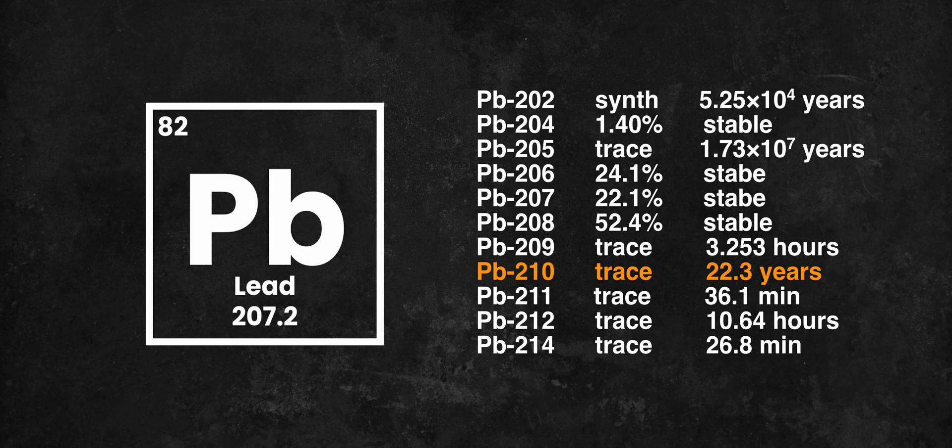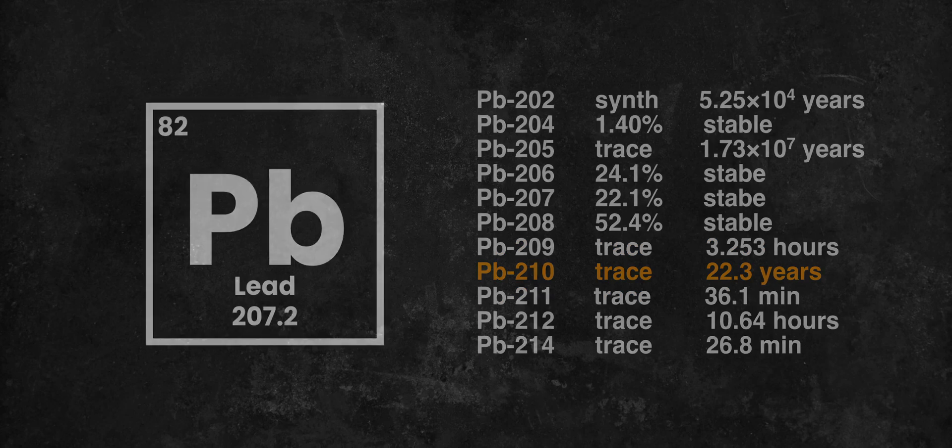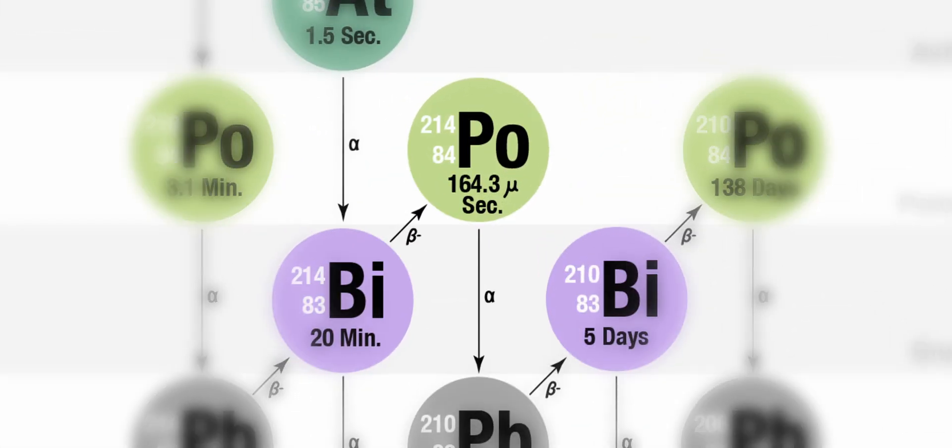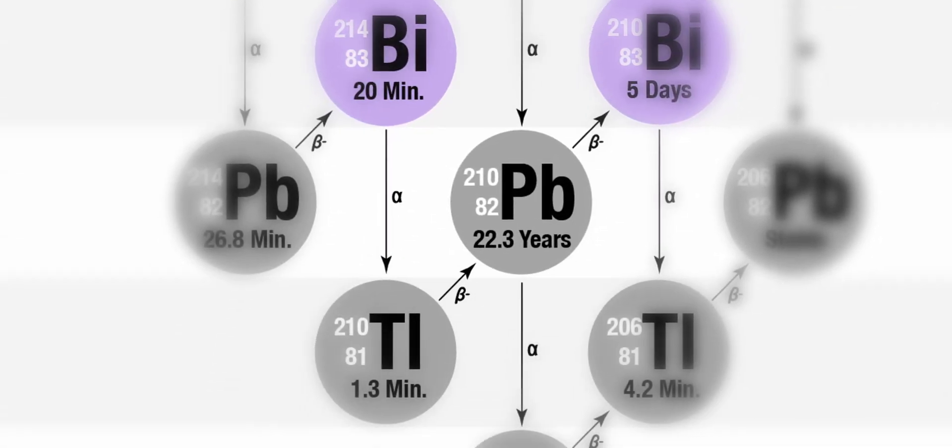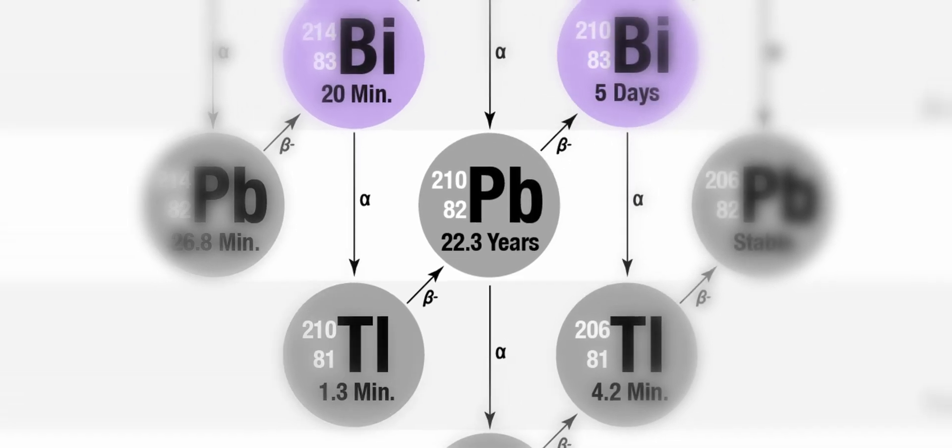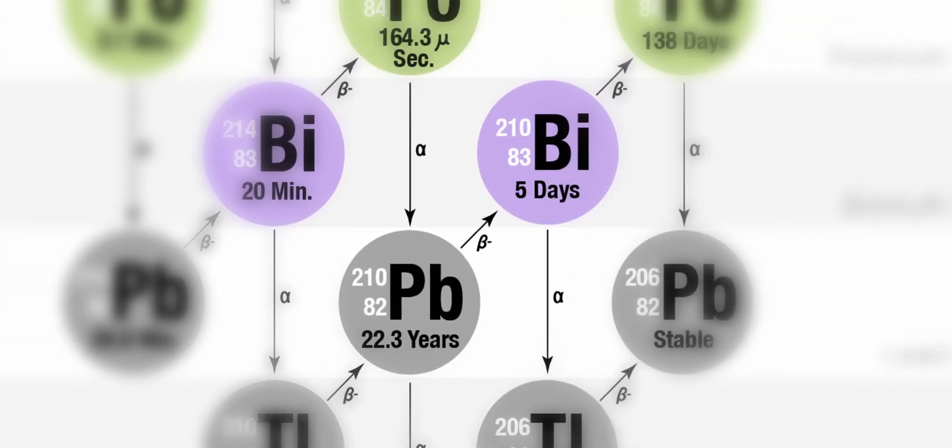Lead-210 exists naturally in trace amounts, as it is one of the daughter isotopes of uranium. More precisely, it is produced by the decay of polonium-214 through an alpha emission, or by beta decay of thallium-210. It undergoes a beta decay into bismuth-210, and it also releases a gamma ray at 47 keV, and has a half-life of 22.3 years.